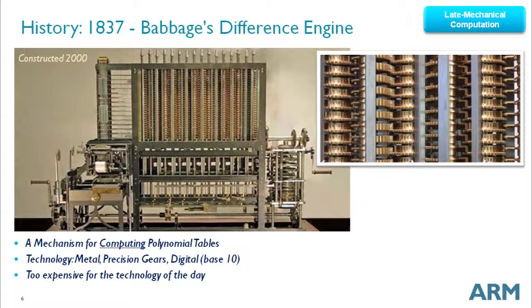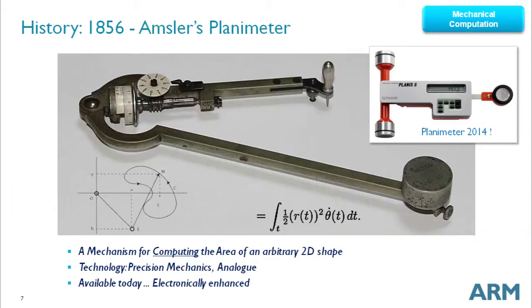Another interesting one is Babbage's Difference Engine — again, a computer, digital base 10. It was too expensive for the technology of the day, so it wasn't impossible to make, just uneconomical. That's an interesting aspect: designing a computer that was uneconomical to build — mechanical technology, but still a computer. Then there's Amsler's Planimeter from 1856. Planimeters are fascinating machines — they allow you to calculate the area of arbitrary shapes drawn on paper, and they're still used today. It was a mechanical device for calculating the area of arbitrary 2D shapes, using precision mechanics.